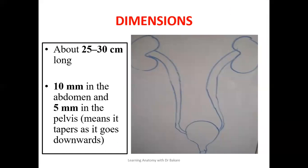The dimension differs between the abdominal region and the pelvis. The entire length of the ureter is between 25 to 30 cm. The dimension in the abdomen is about 10 mm, while in the pelvic region it is about 5 mm. This shows that the caliber in the abdominal region is wider, and the diameter tends to reduce downwards. This is basically to create a configuration that will fit into the entrance of the urinary bladder.